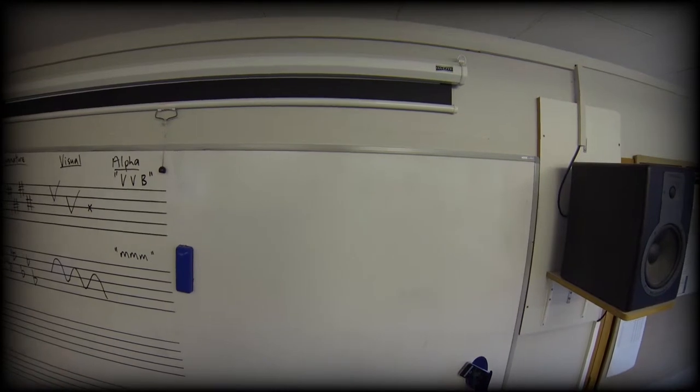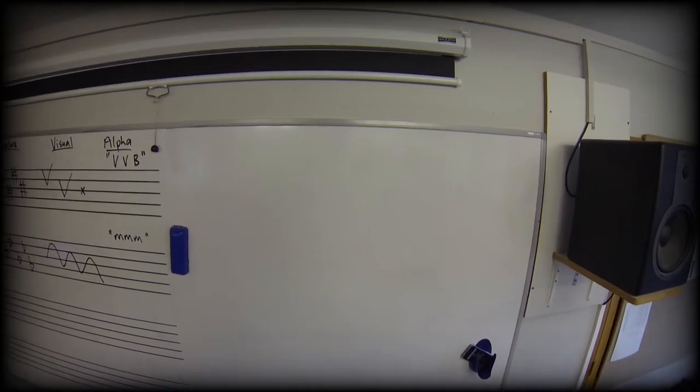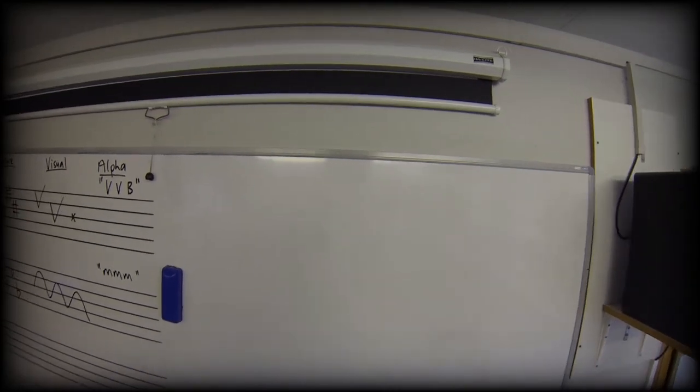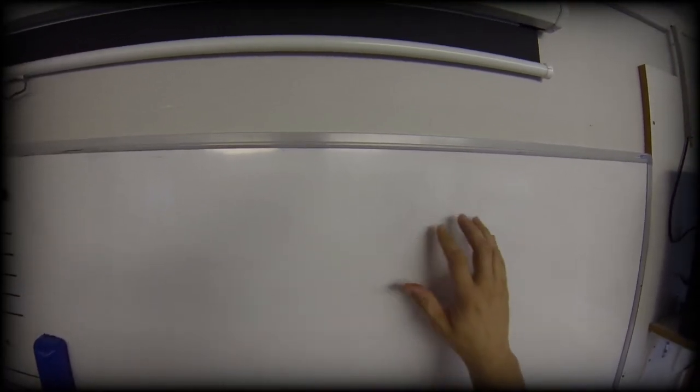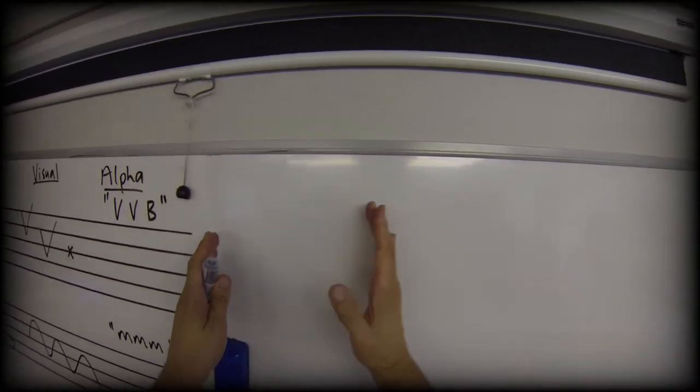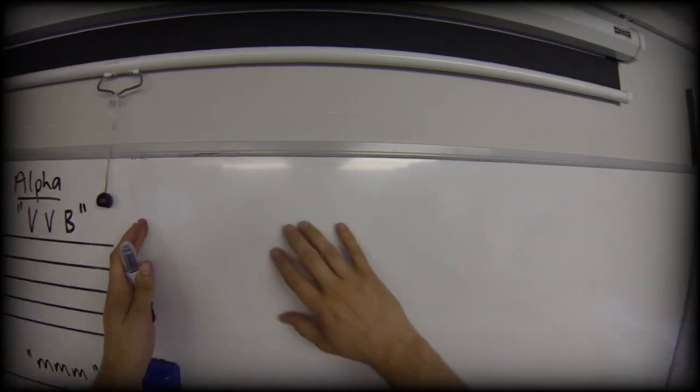Key signatures can make our life so easy and so difficult. How they help is that instead of having to write each individual sharp or each individual flat that we use on each note, we group them all at the beginning of each line and that group applies to every use of that note for the whole line.